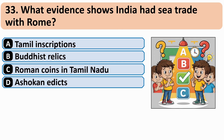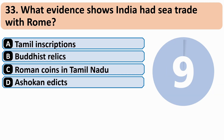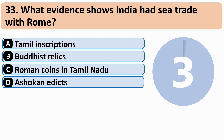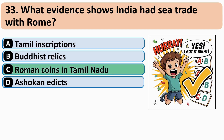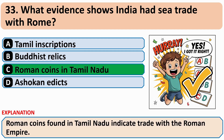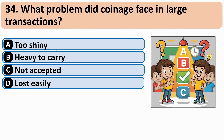What evidence shows India had trade with Rome? The correct answer is C — Roman coins found in Tamil Nadu. What problem did coinage face in large transactions? The correct answer is B — Heavy to carry.